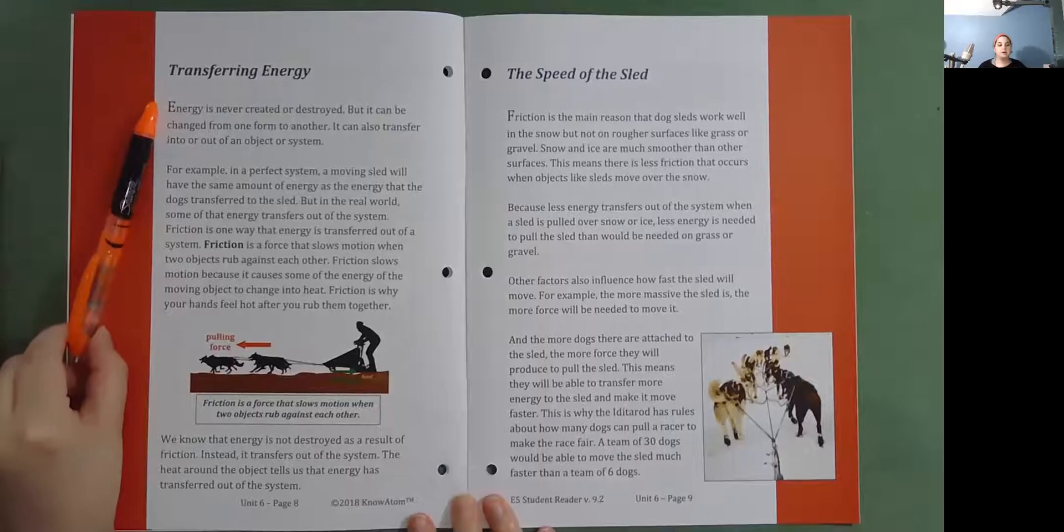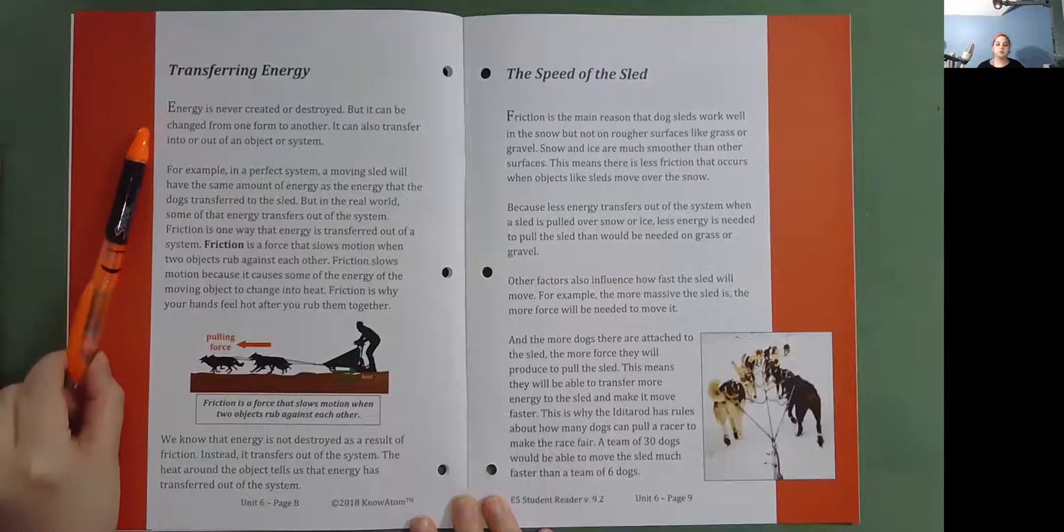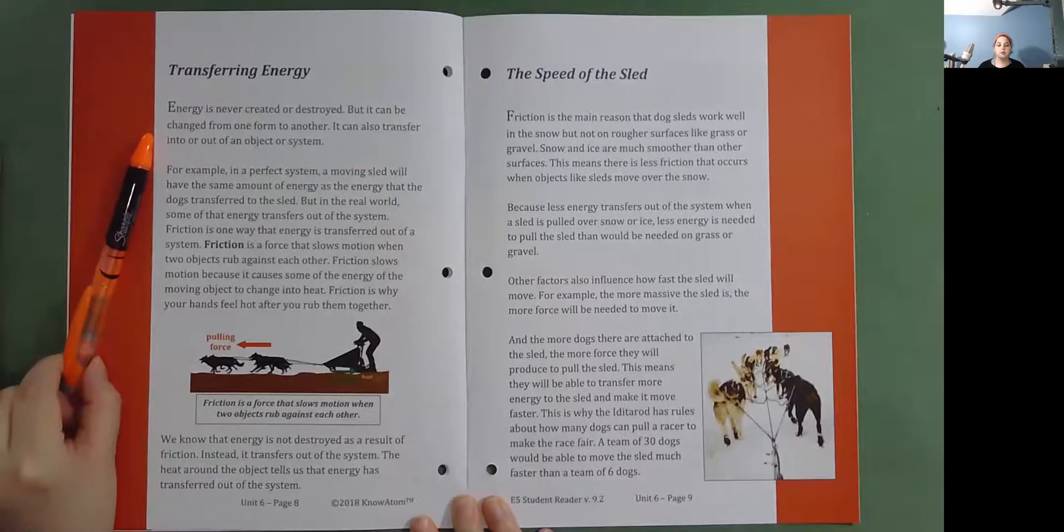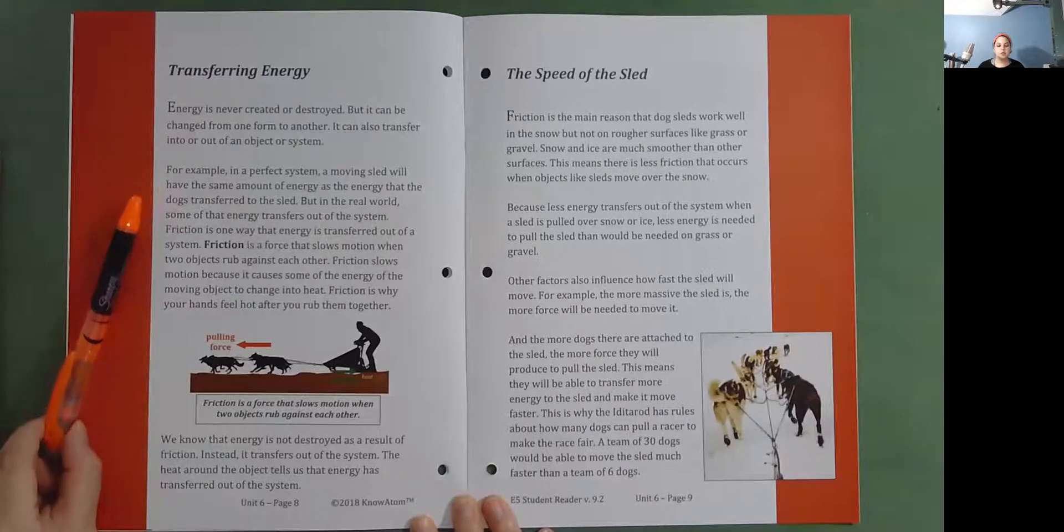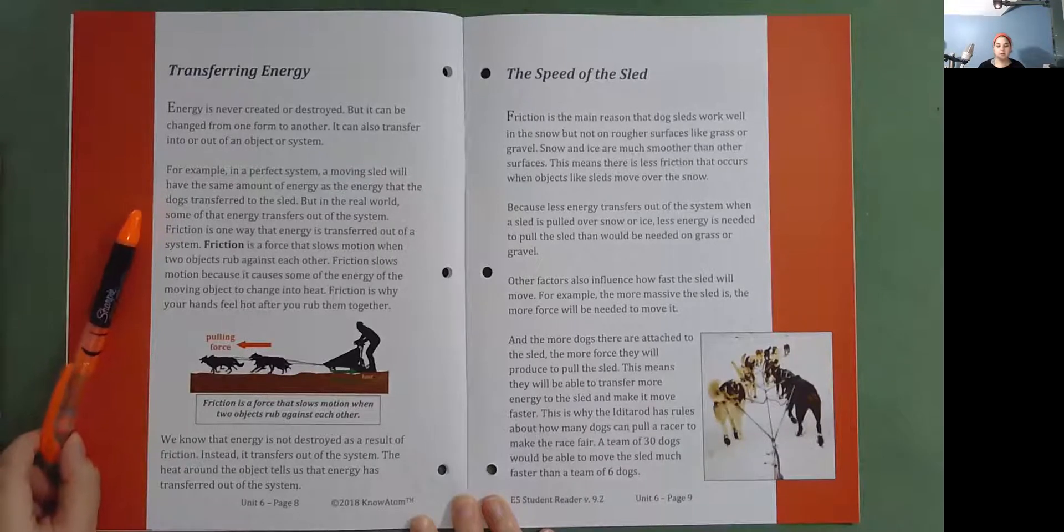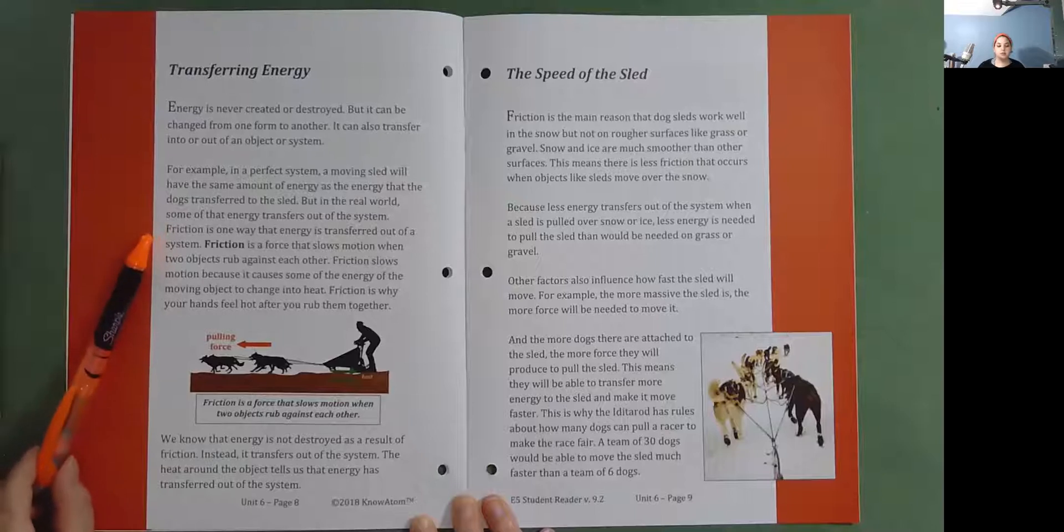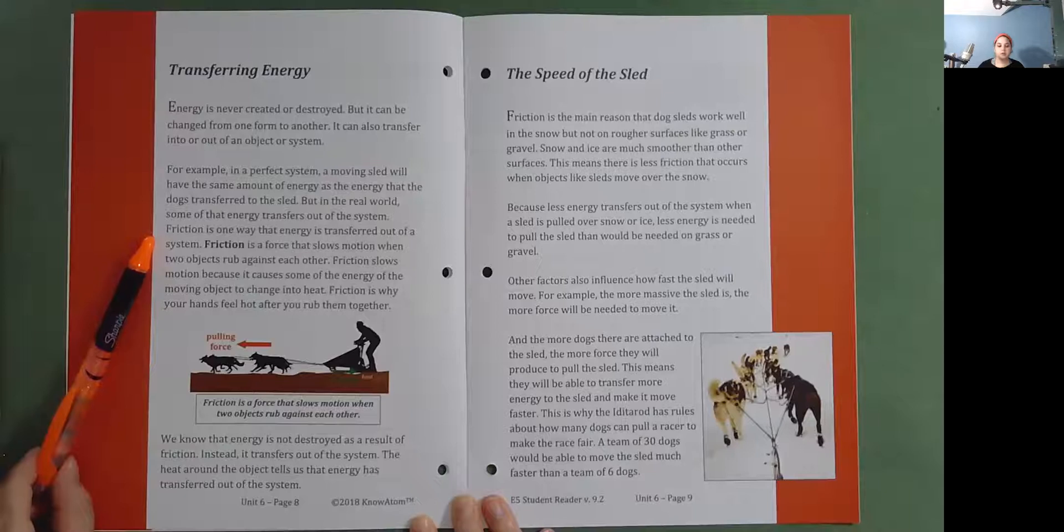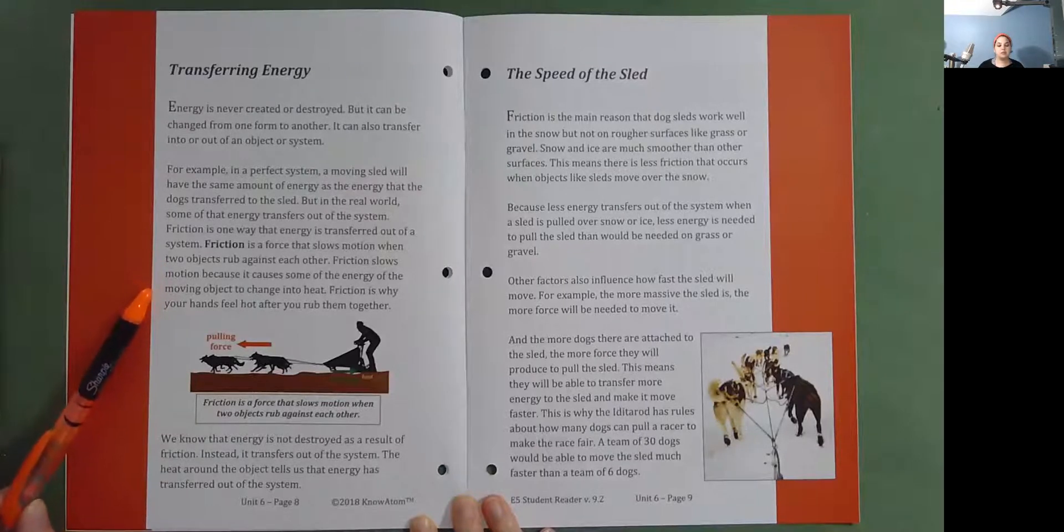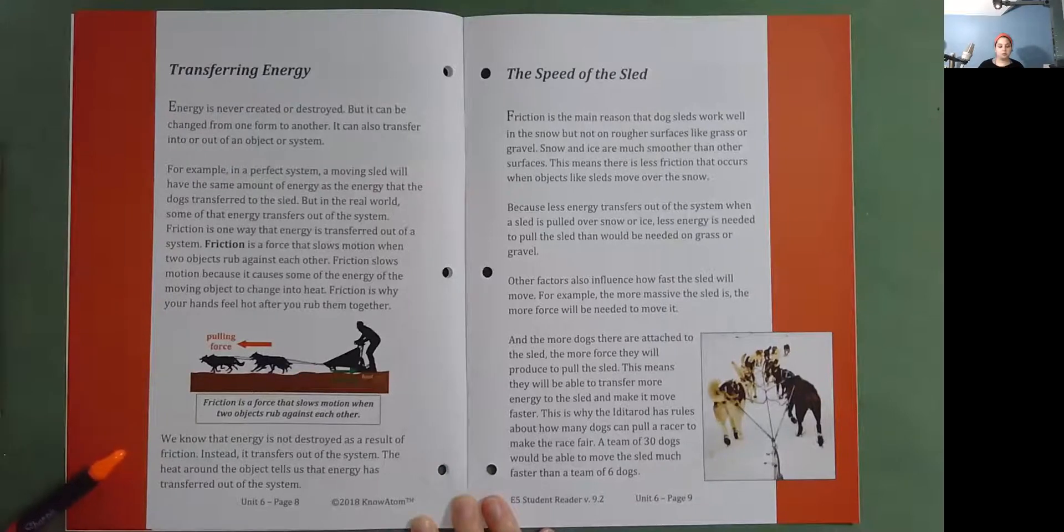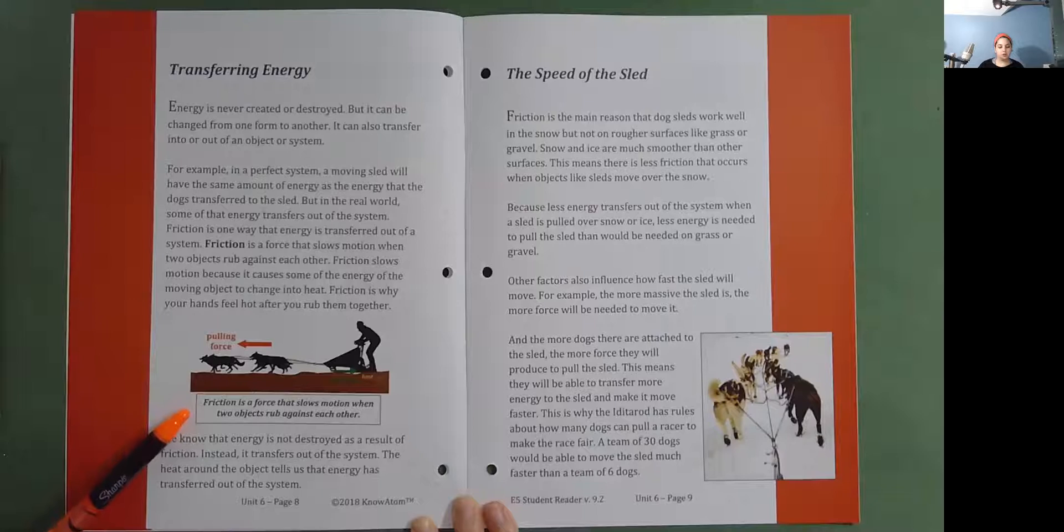Transferring energy. Energy is never created or destroyed, but it can be changed from one form to another. It can also transfer into or out of an object or system. For example, in a perfect system, a moving sled will have the same amount of energy as the energy that the dogs transferred to the sled. But in the real world, some of that energy transfers out of the system. Friction is one way that energy is transferred out of a system. Friction is a force that slows motion when two objects rub against each other. Friction slows motion because it causes some of the energy of the moving object to change into heat. Friction is why your hands feel hot after you rub them together. We know that energy is not destroyed as a result of friction. Instead, it transfers out of the system. The heat around the object tells us that energy has transferred out of the system. Friction is a force that slows motion when two objects rub against each other.